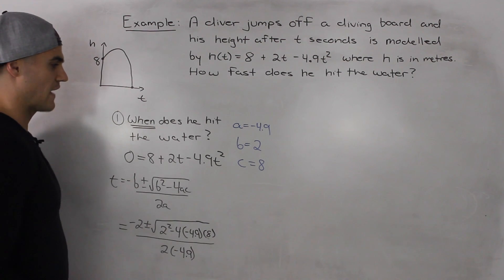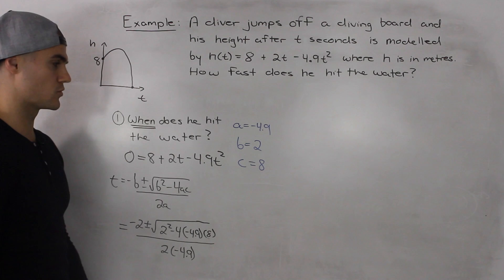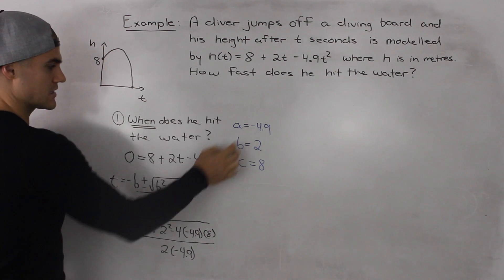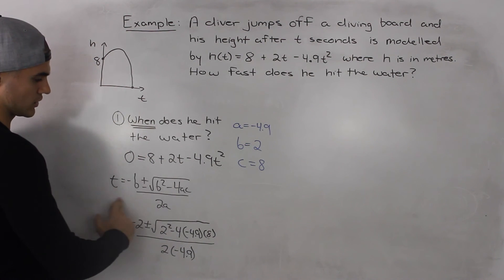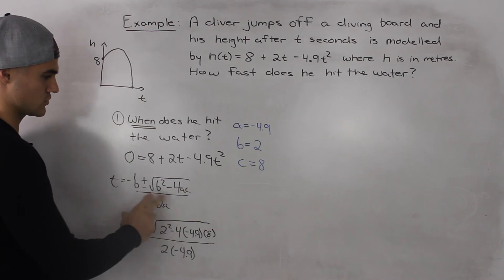We won't be able to factor this because this 4.9 here won't allow us to factor it smoothly. So we're going to have to use the quadratic equation. So a is equal to negative 4.9, our b value is 2 and our c value is 8. Quadratic equation is negative b plus or minus b squared minus 4ac over 2a.